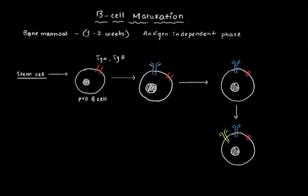This Ig-alpha and Ig-beta are bound together by disulfide bonds. Next, this pro-B-cell is converted into something called the pre-B-cell or precursor B-cell.